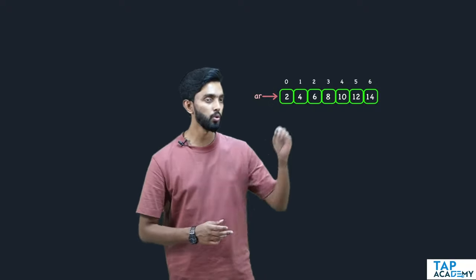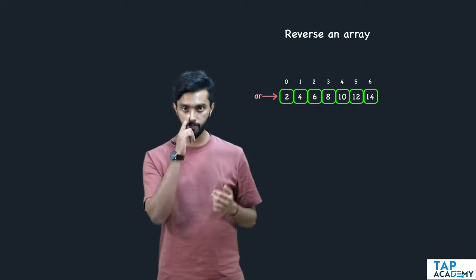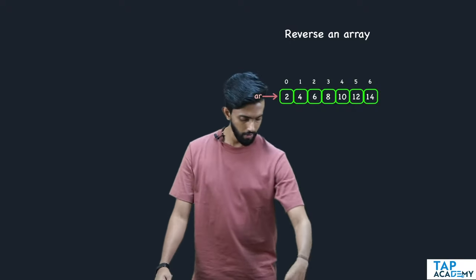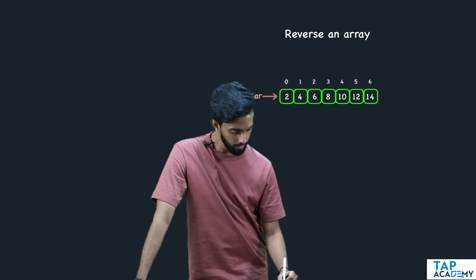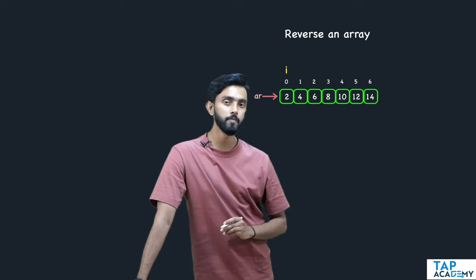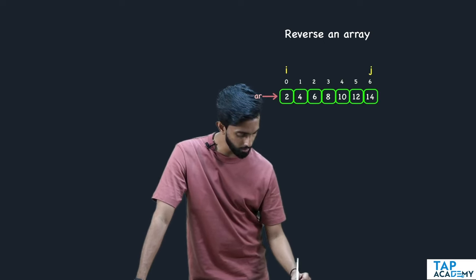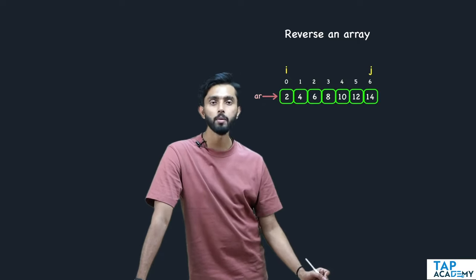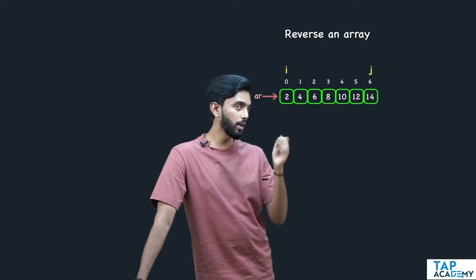The next simple operation you must know: assume I have an array. You have to reverse this array. It's very simple — all you have to do is take one pointer, keep it at the first element, take one more pointer, keep it at the last element. I'm calling this i and j. So i is here, j is here. Now if I have to reverse an array, what should happen?